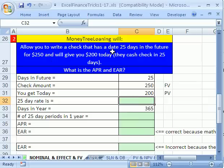They will allow you to write a check that has a date 25 days in the future for $250 and will give you $200 today, and they'll cash it in 25 days. Our goal here is to calculate the APR and Effective Annual Rate, two rates. We want to figure out what rate they are charging us when they do this short-term loan.